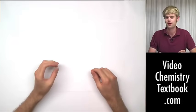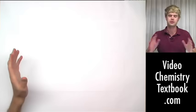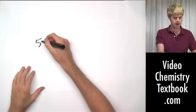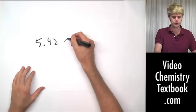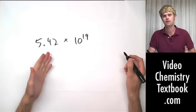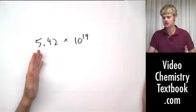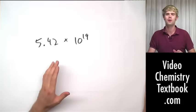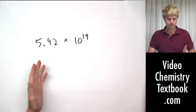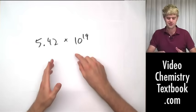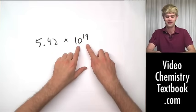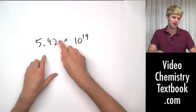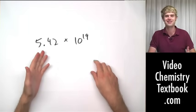Remember scientific notation, where instead of writing a whole bunch of zeros we'd express a very large number as something like 5.42 times 10 to the 19th? How do we determine how many significant figures are in a number expressed in scientific notation? It's really easy. All we have to do is completely ignore the 10 raised to the exponent. The only thing we want to pay attention to is this part here, which we call a mantissa.